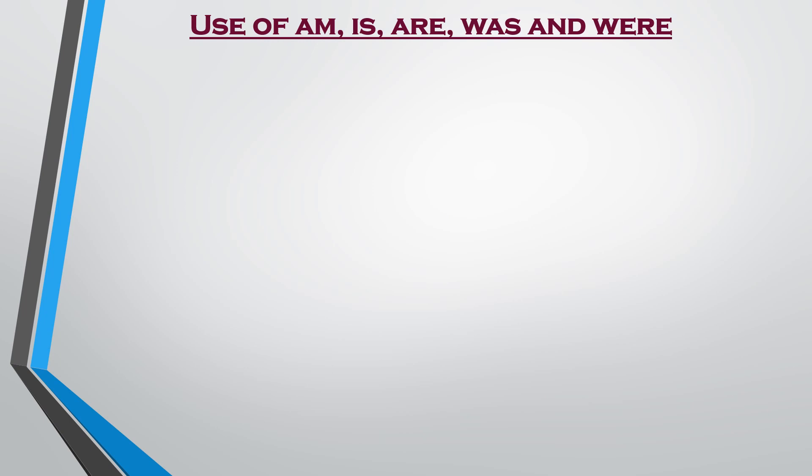Now, the use of am, is, are, was, and were. Is, am, and are are simple present forms of the verb 'to be.' They are used to describe the state, feeling, or condition that something or someone is in. Thus, is, am, and are connect the subject to what is being said about the subject.